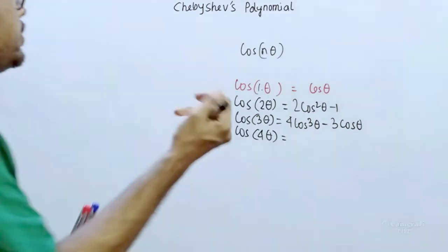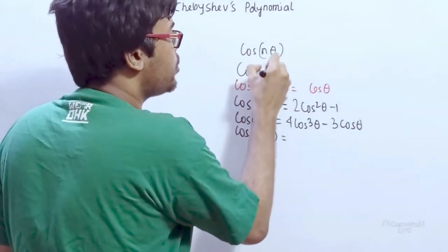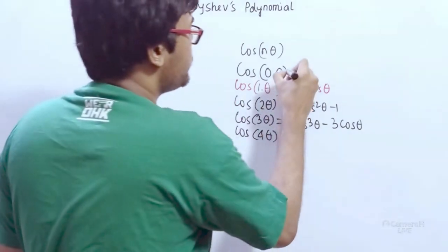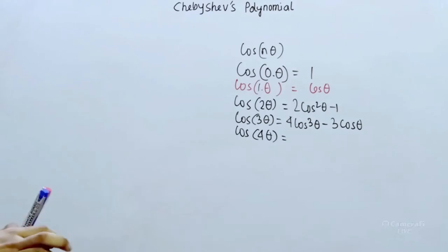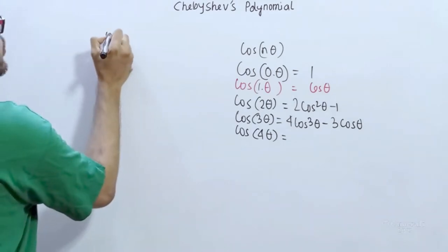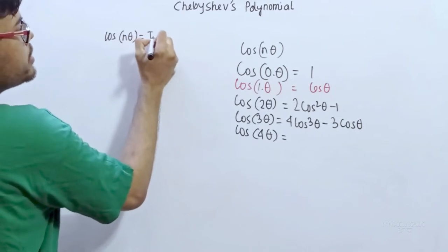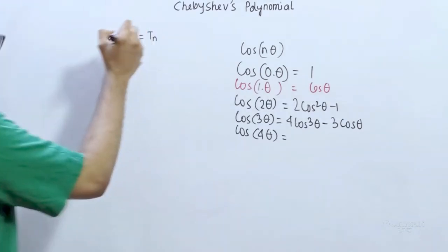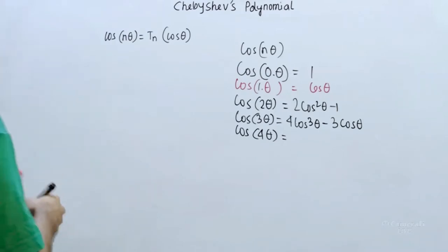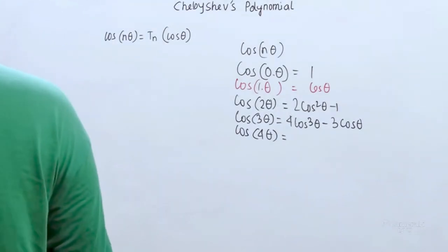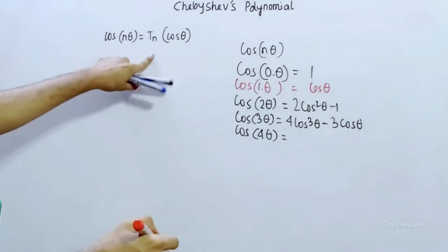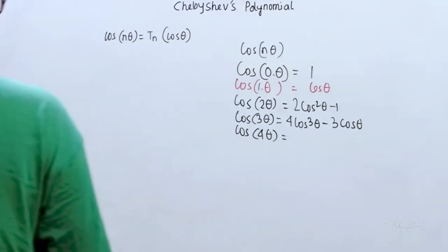Let's write the actual values. When it comes to cos(0·θ), which means cos(0), we write it as 1. Basically, cos(nθ) becomes a trigonometric function of n times cos θ. So we write cos(nθ) = T_n(cos θ), where T_n is the Chebyshev polynomial.